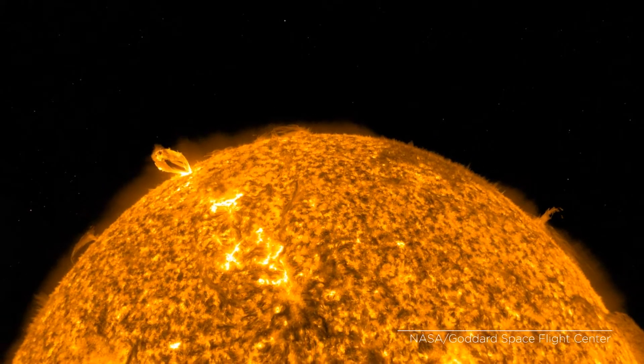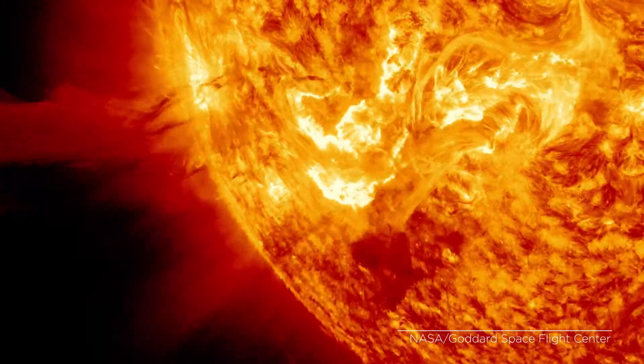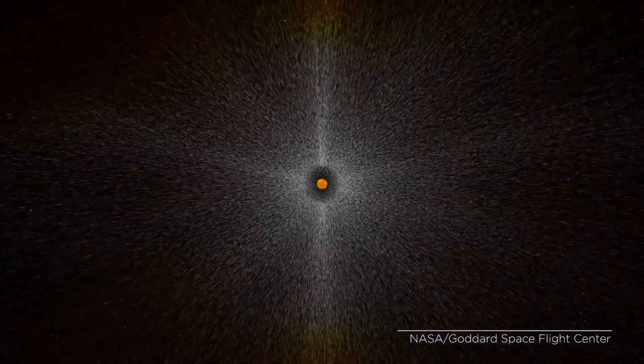Sun is blowing charged particles all the time. And the velocity of these particles is in order from 400 kilometers per second up to several thousands of kilometers per second.